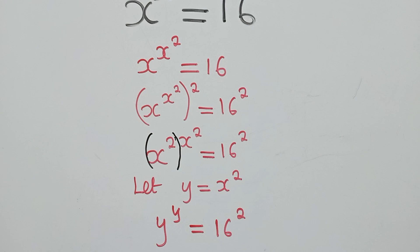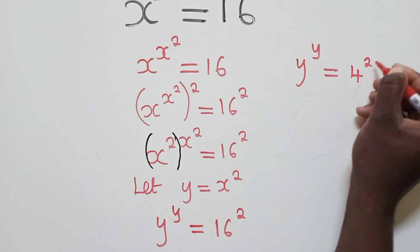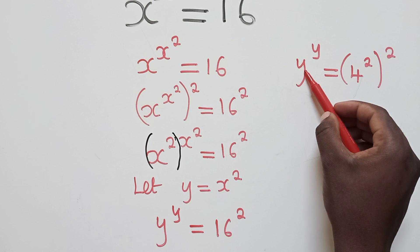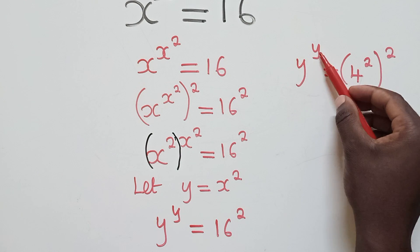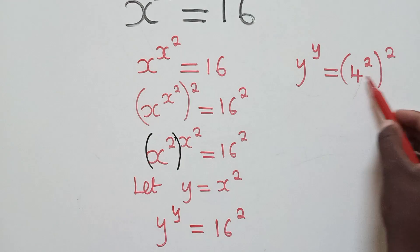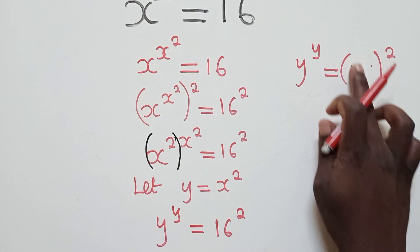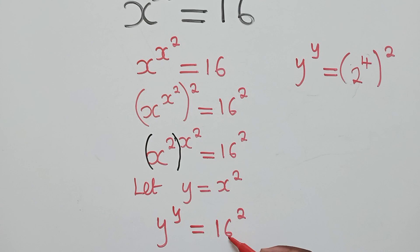From this stage we say y^y = 4 power 2, power 2. Our idea is to make sure that what is on the base here is similar to what is on the base there, and what is in the power here is similar to what is in the power there. We need to be smart — using 4 directly would be difficult, so let's try to find the smallest base. 2 power 4 will definitely give us 16.